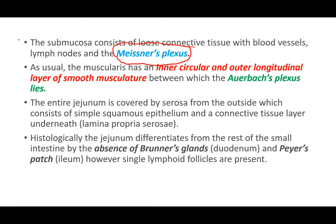Histologically, the jejunum is differentiated from the rest of the small intestine by the absence of two things: Brunner's glands of the duodenum, and the Peyer's patches of the ileum. However, it has a single layer of follicles. The Peyer's patches are lymphoid aggregates that characterize the ileum, and they are absent in the jejunum.